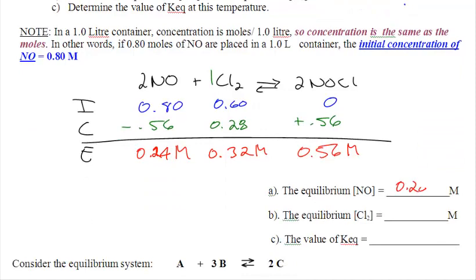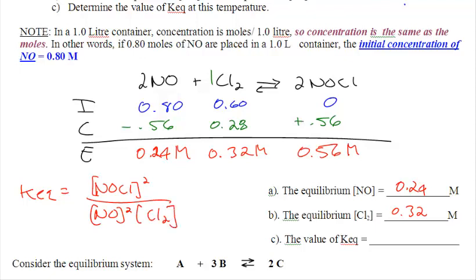So we now have the equilibrium concentrations of all the species. NO is 0.24. Equilibrium Cl2 is 0.32. Now we'll plug that into the expression to solve for KEQ. KEQ equals products over reactants over NO squared times Cl2. Plug in all the numbers. 0.56 squared, 0.24 squared times 0.32. I believe the answer was 17. So that's the general ice table. You guys are going to do a couple of those tomorrow in class. And we're going to leave it right there.